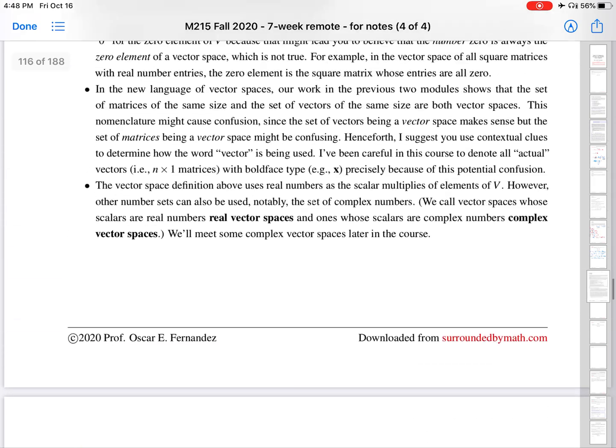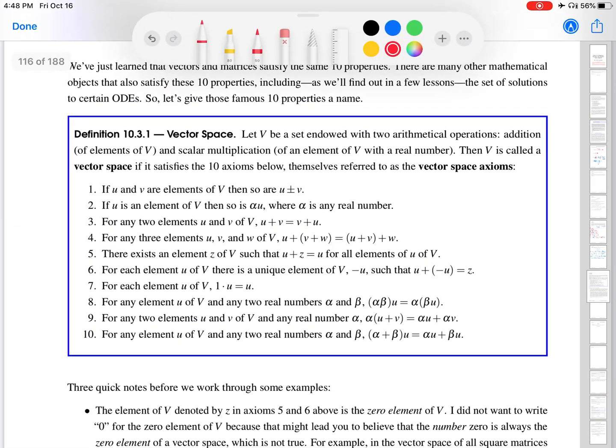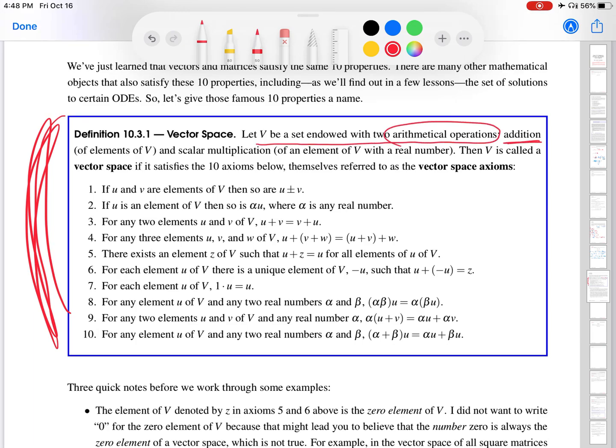I'm going to scroll up real quick to remind you what that means. This is the definition in the previous page of what a vector space is. So I'll read it and make a few comments. Let V be a set endowed with two arithmetical operations: addition of elements of V and scalar multiplication of an element of V with a real number. So far, it's kind of like cooking. We have three ingredients so far: a set V, and then there are two ways that you are told you can combine things.